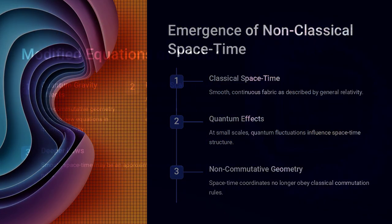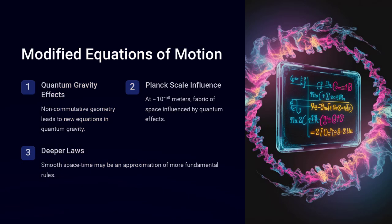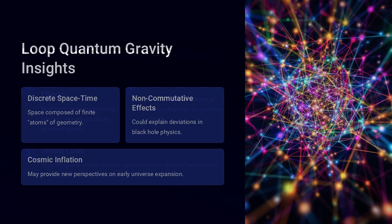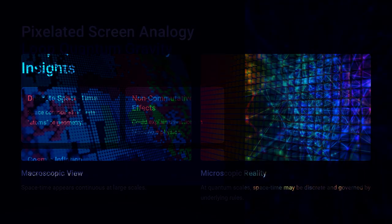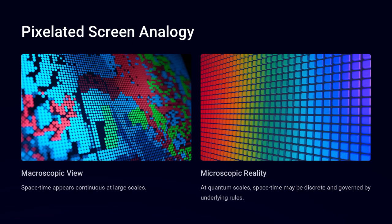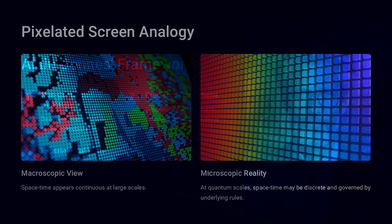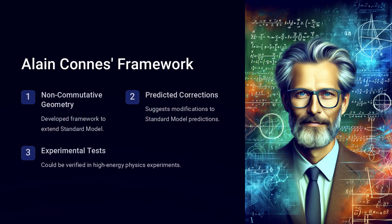Imagine trying to measure where an electron is, only to find that by defining its x-coordinate, its y-coordinate becomes uncertain. How can space behave like this, and what does it mean for our understanding of reality?